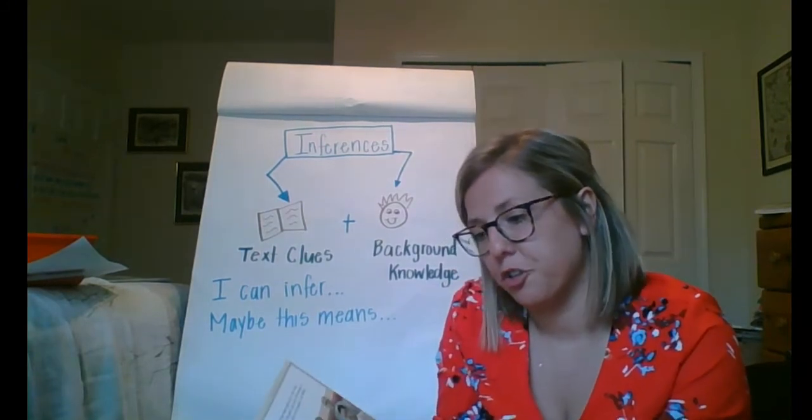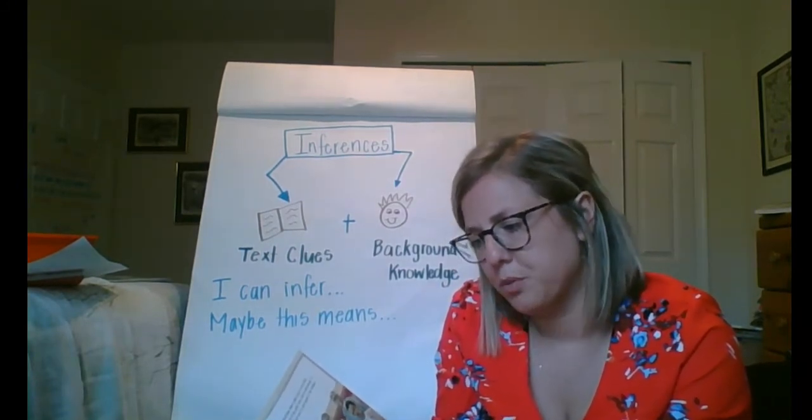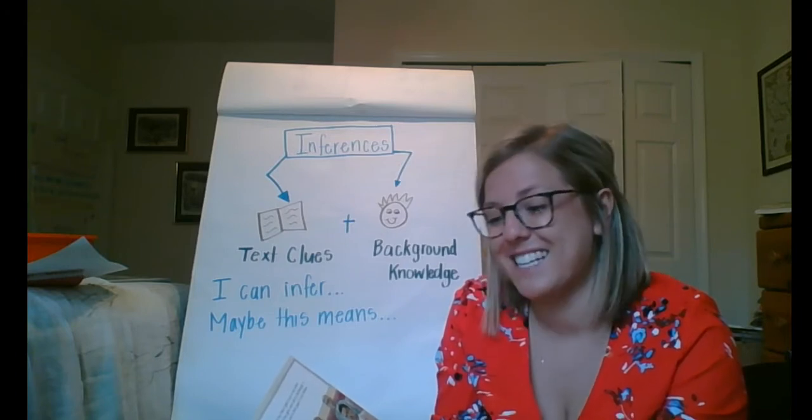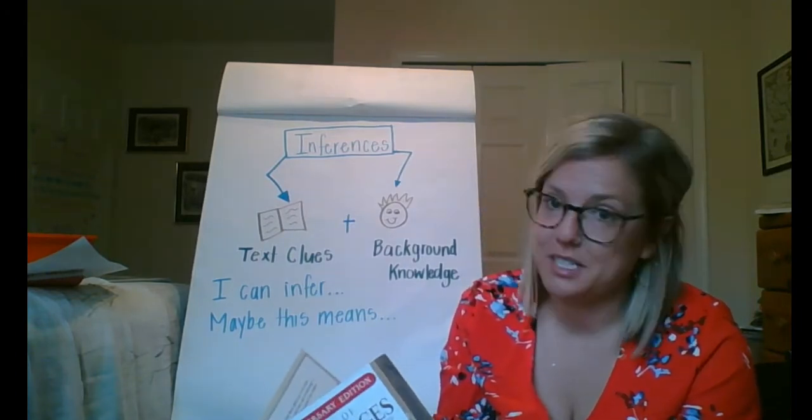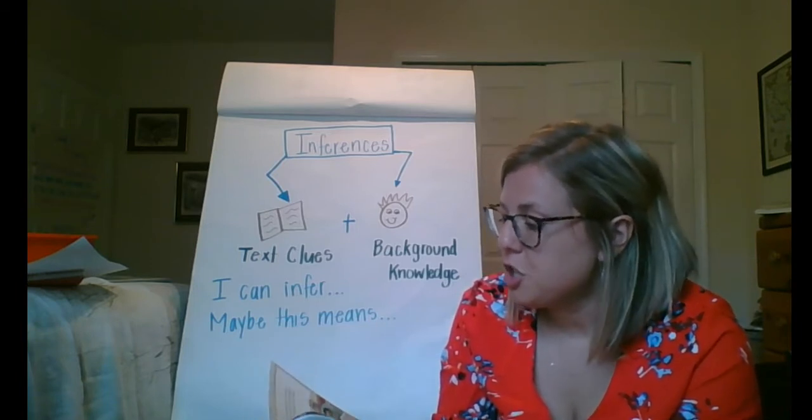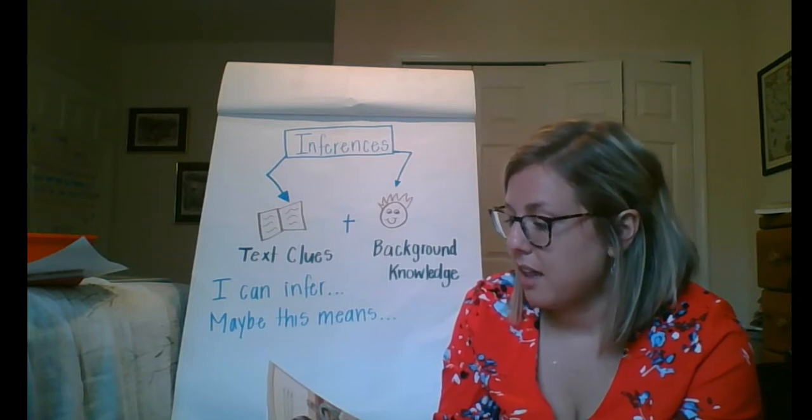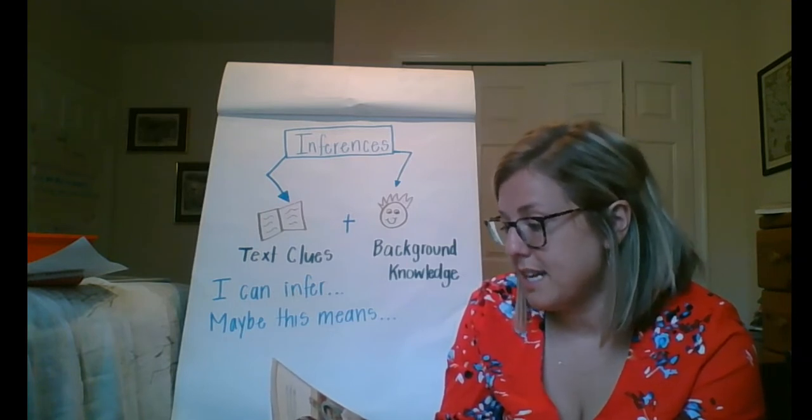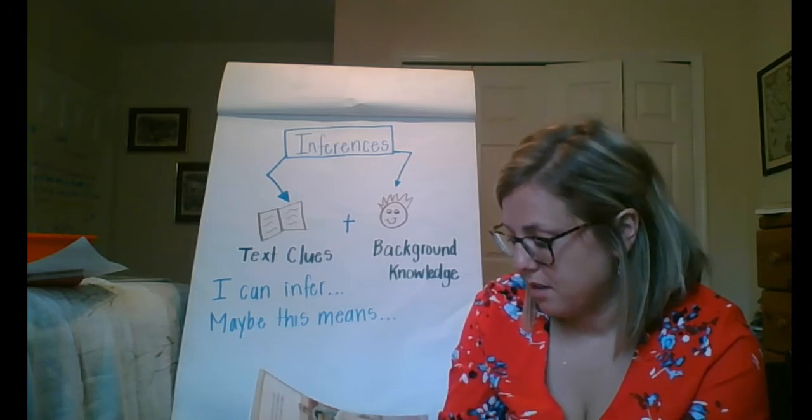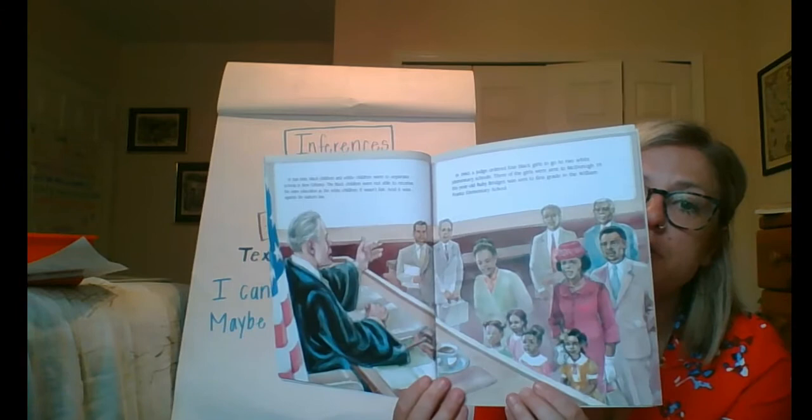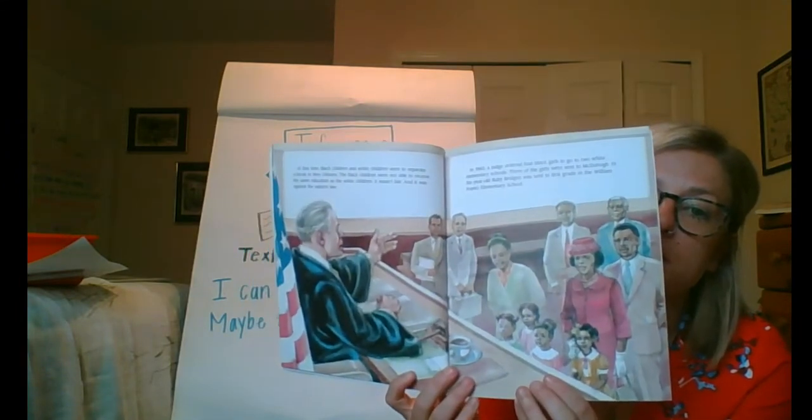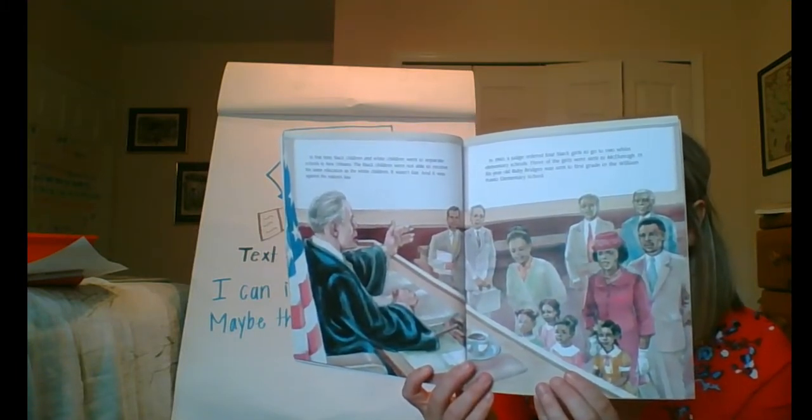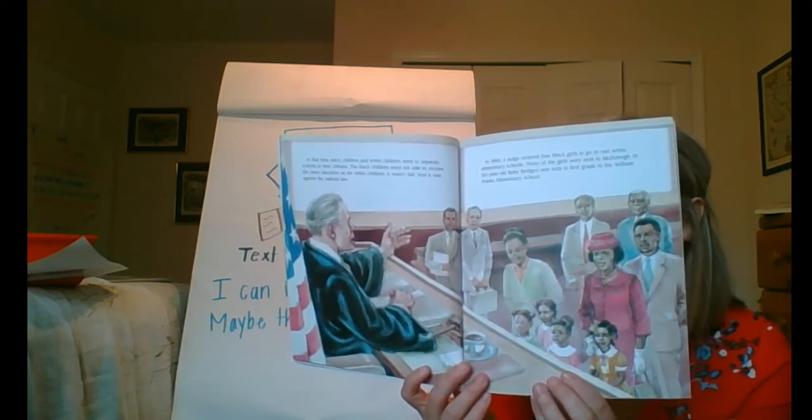At that time, black children and white children went to separate schools in New Orleans. The black children were not able to receive the same education as the white children. It wasn't fair. And it was against the nation's law, which means black children and white children did not go to school together. In 1960, a judge ordered four black girls to go to the white elementary schools. Three of the four girls went to McDonough 19. Six-year-old Ruby Bridges was sent to first grade in William Franz Elementary School. I want you to think about if you were in Ruby's shoes or one of the other little girl's shoes, how would you feel? Would you be excited, nervous, worried, anxious? And why would you feel that way?